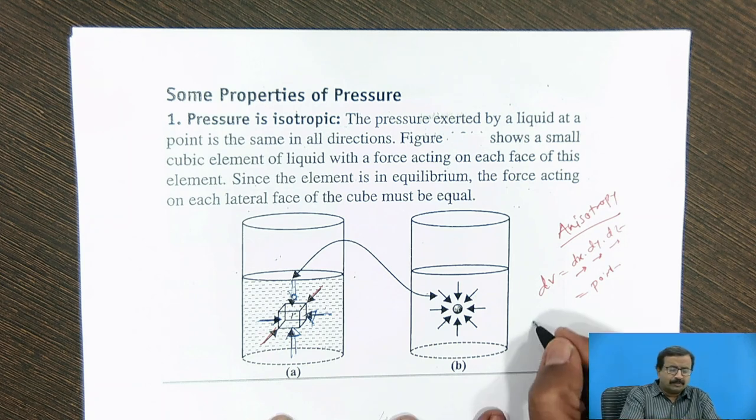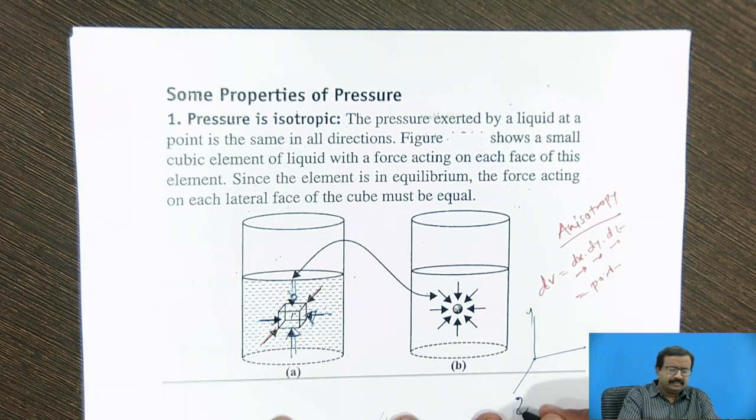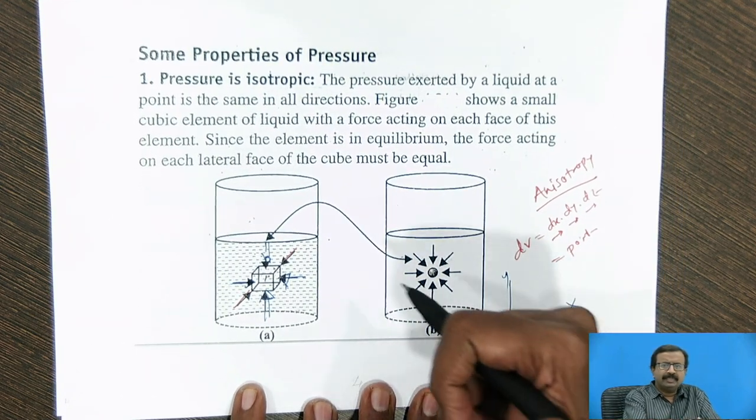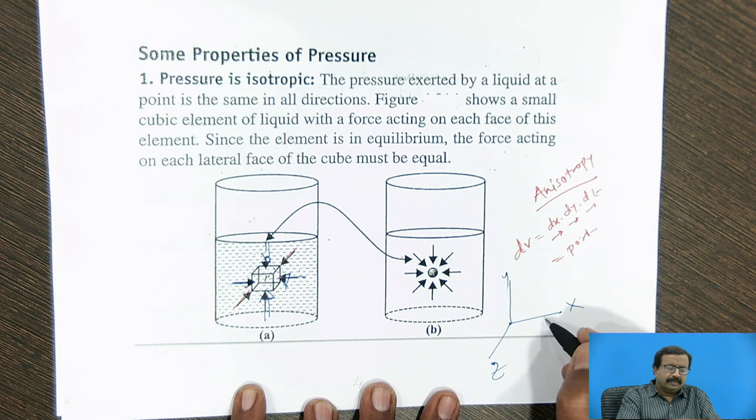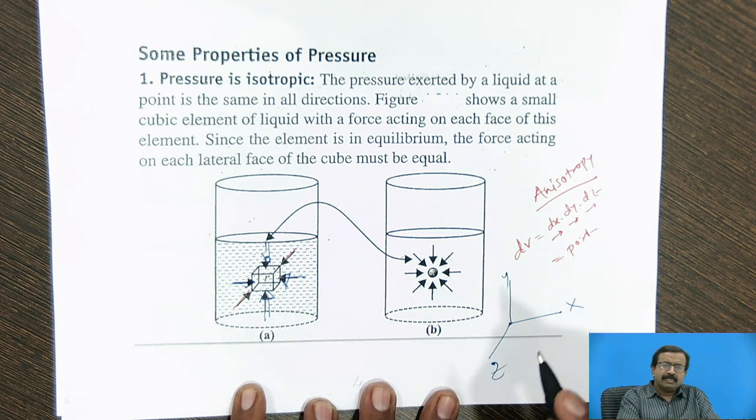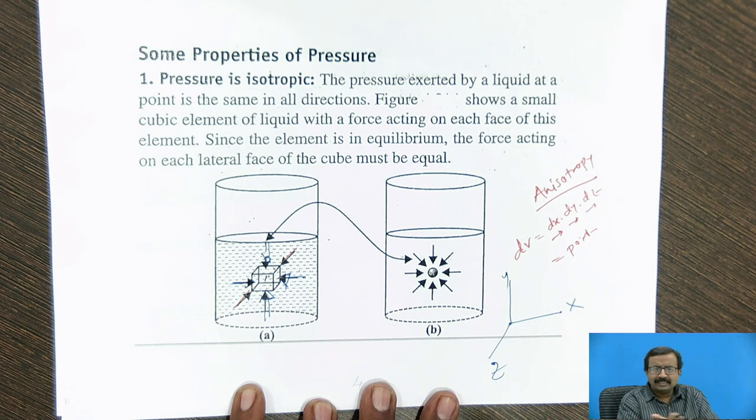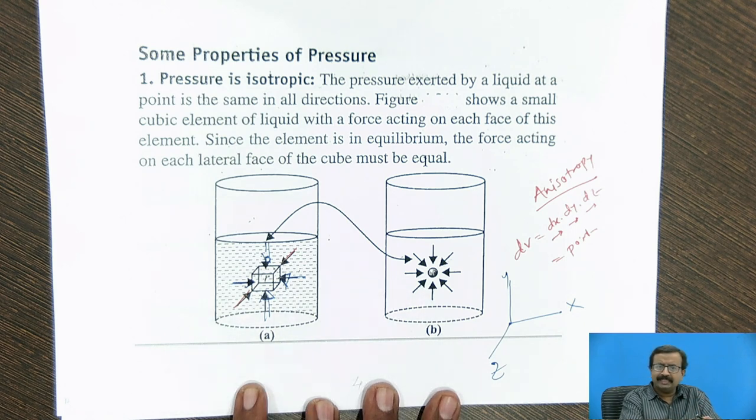if they are not balanced, suppose this is my x, y and z axis. If I use the right-hand rule, this is x, y and z. So if net x component is present, then what will happen? Fluid will have acceleration to the right side. If net y component is present, fluid will have acceleration in the y direction. If net z component is present, fluid will have component in the z direction.